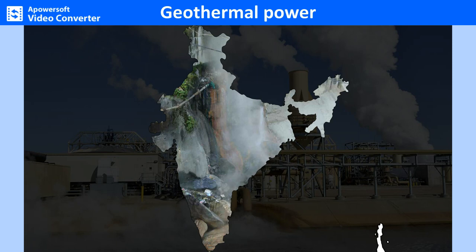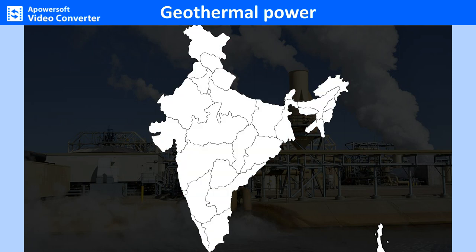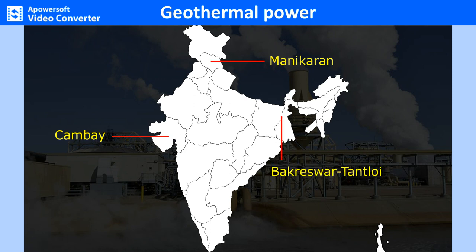India has many small hot springs that can be used effectively to tap geothermal power. Presently, geothermal stations are located at Manikaran (Himachal Pradesh), Kembe (Gujarat), Bakreswar and Tantloi (West Bengal and Bihar), Godavari Valley (Andhra Pradesh) and Barron Island (Andaman Islands).